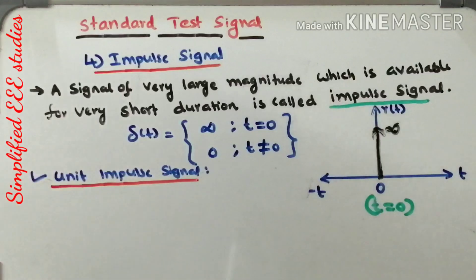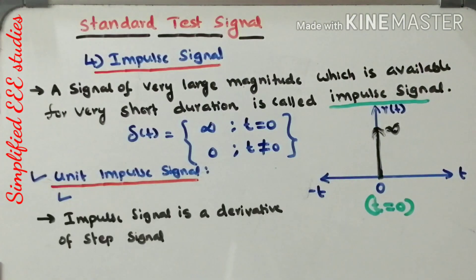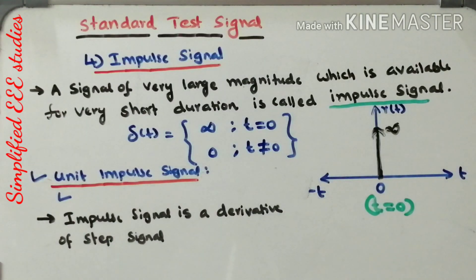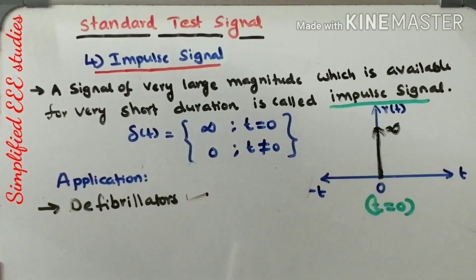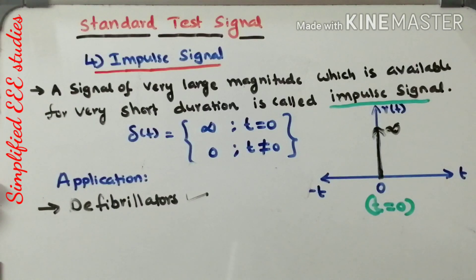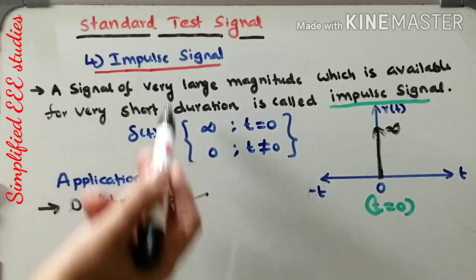The unit impulse signal is defined as a signal which has zero value everywhere except at t equal to 0, where its magnitude is infinity. Importantly, the impulse signal is the derivative of the step signal. The impulse signal is also referred to as the weighting function of the system. One of the most important applications of the impulse signal is the defibrillator — a biomedical application — where by using a defibrillator it is possible to create an artificial heart pulse.